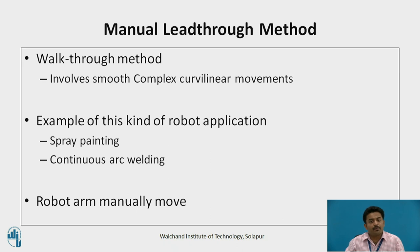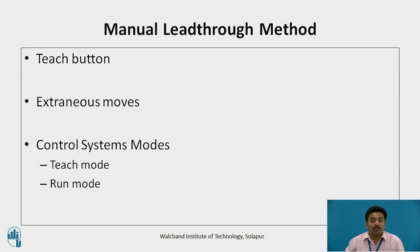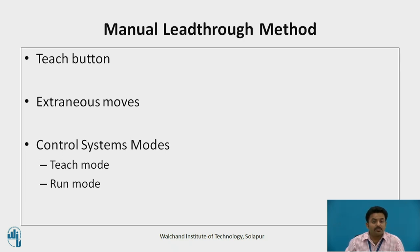In the manual lead-through method, the programmer physically grabs the robot arm and manually moves it through the desired motion cycle. The teach pendant or teach button is often located near the wrist of the robot, which is depressed during those movements of the manipulator that will become part of the programmed cycle. This allows the programmer the ability to make extraneous moves of the arm without their being included in the final program.